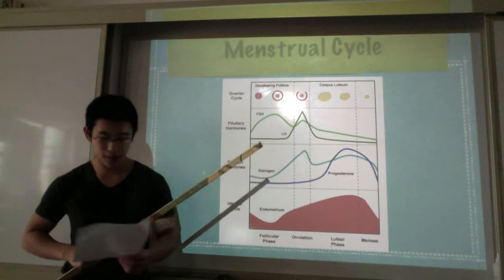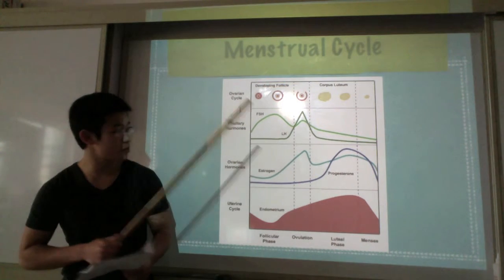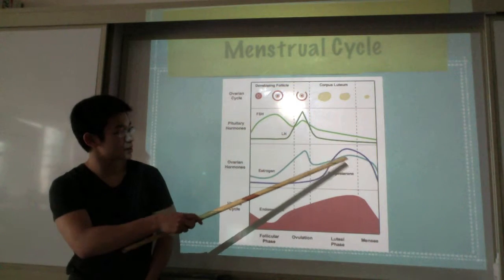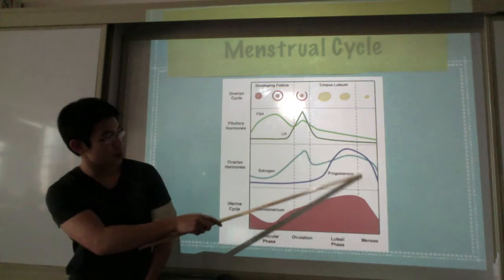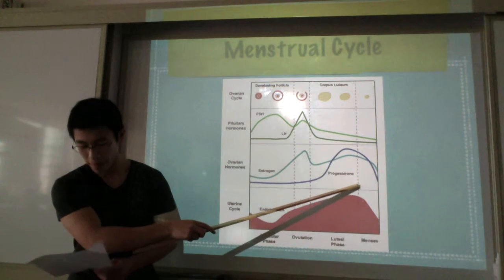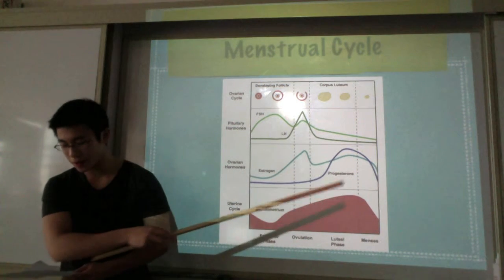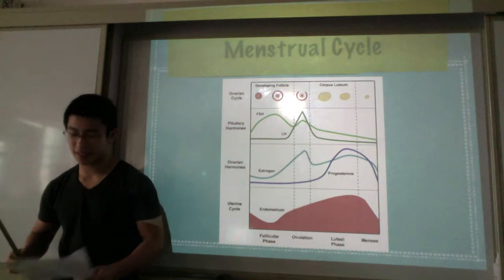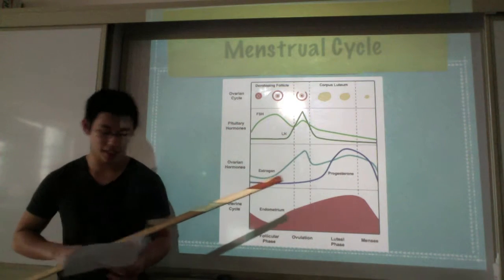But when the corpus luteum degrades, the progesterone levels drop — you can see progesterone dropping here. With that drop in progesterone, the endometrium cannot be maintained, and that's when the girls start bleeding.